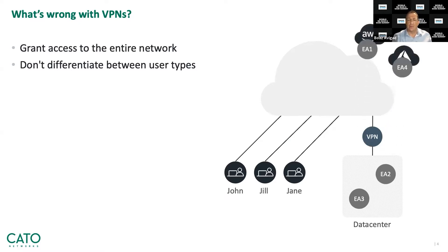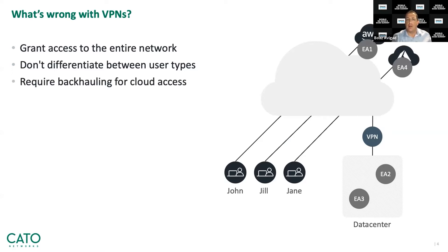Third, the shift to cloud. Organizations are increasingly migrating their applications to cloud platforms such as AWS and Azure. Since VPNs are typically deployed at the ingress point to the data center, the only way to authenticate remote users is by backhauling their traffic to the data center, and only then forwarding it to the cloud application. This adds latency, which impacts application performance, and turns the VPN into a bottleneck. Fourth, VPNs don't scale well — they require VPN concentrators which don't aggregate efficiently and can become very costly.